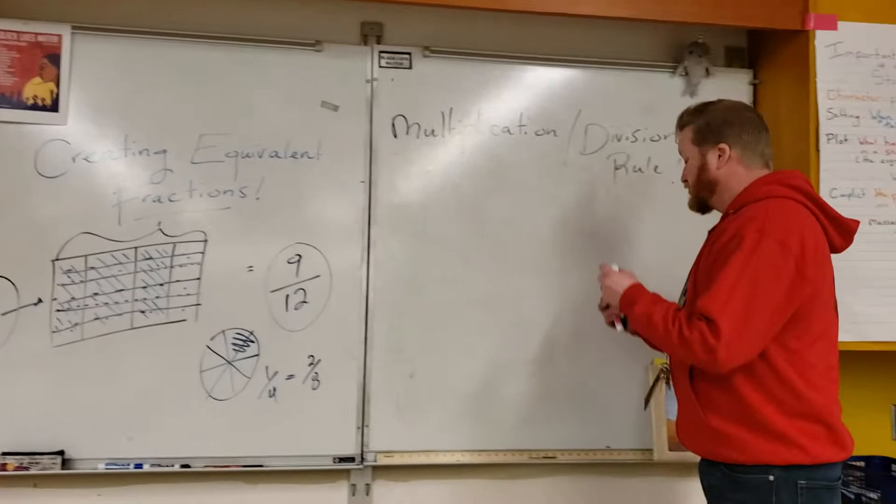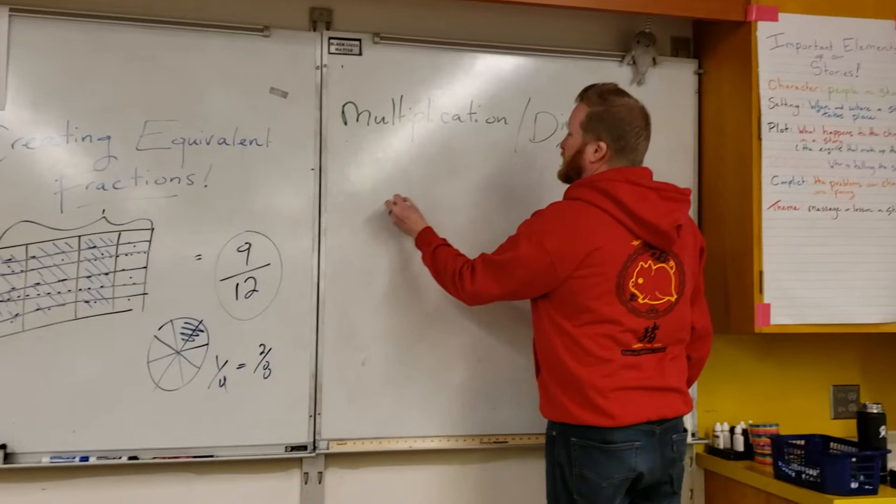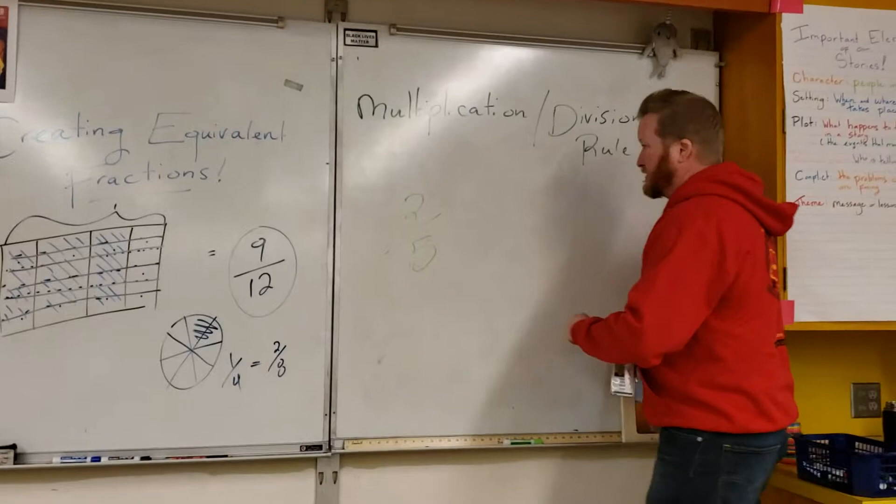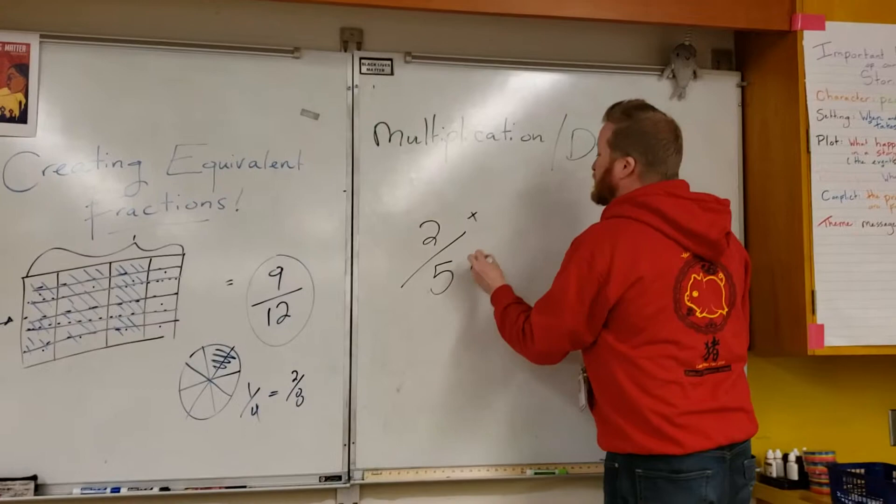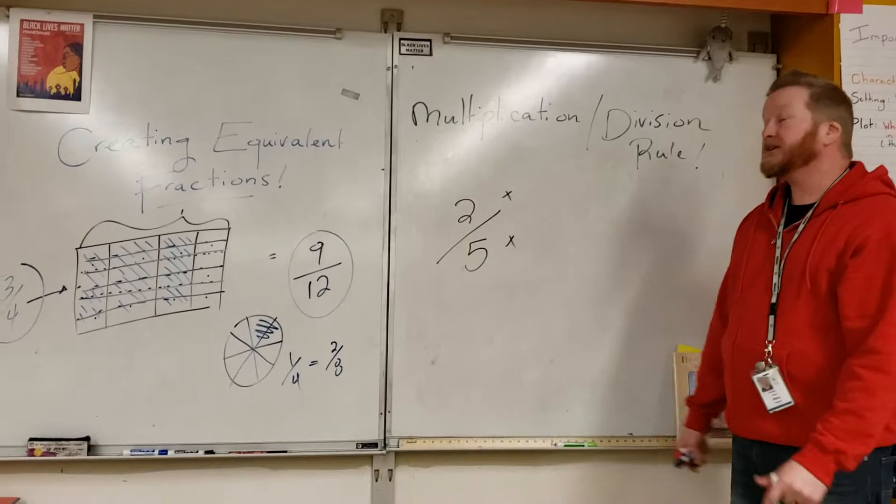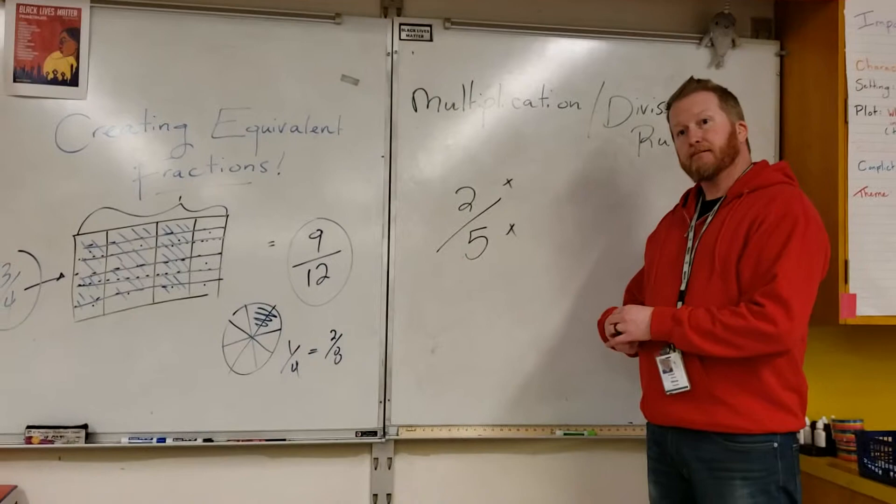Jumping ahead to the multiplication rule that Quincy was talking about earlier, I'm going to take the fraction two-fifths. I'm going to imagine that is not going to show up very well on the camera, so we're going to start over with two-fifths. Another way to find an equivalent fraction is to use the multiplication rule and do what with this fraction, Quincy?